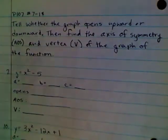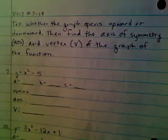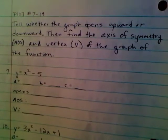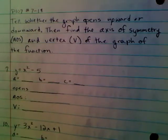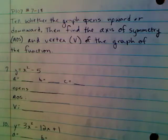Hi everyone, we are on page 107 in the Math 1 book. It says, tell whether the graph opens upward or downward, then find the axis of symmetry, the AOS is what I'm going to call it, and the vertex, I call that V, of the graph of the function.